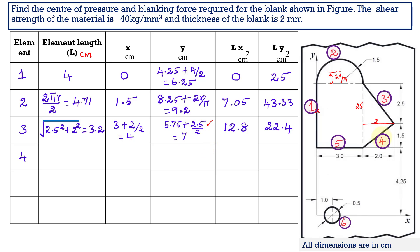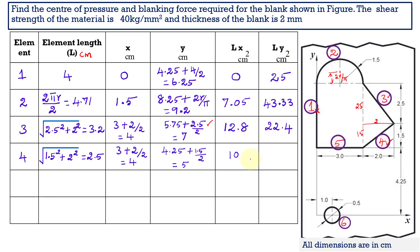The fourth entity is another slanting line. We take this as a right-angle triangle where the height is 1.5 and the horizontal length is 2. The length of entity 4 is root of 1.5 squared plus 2 squared, which gives 2.5 centimeter. X bar is located 3 plus 2 divided by 2, which equals 4 centimeter from the reference axis. Y bar is 1.5 divided by 2 plus 4.25, which equals 5 centimeter. LX and LY are calculated by multiplying L with X and L with the corresponding Y value.